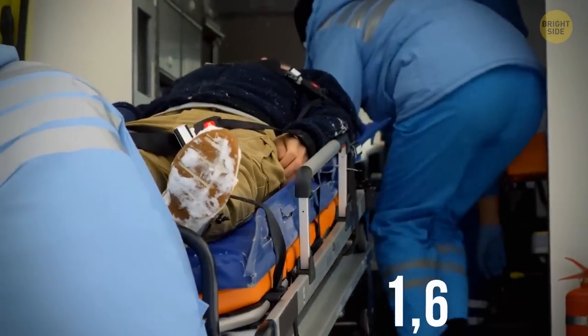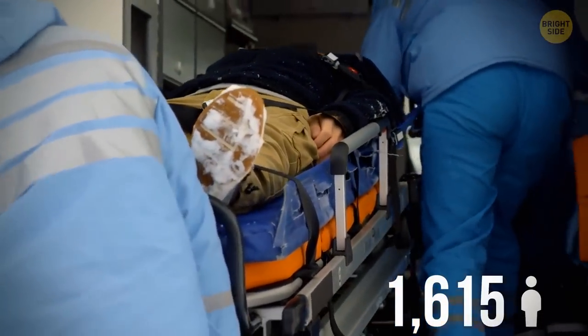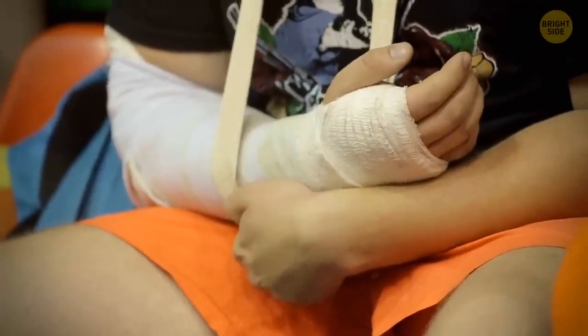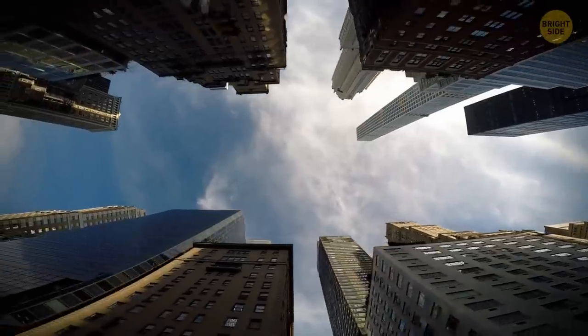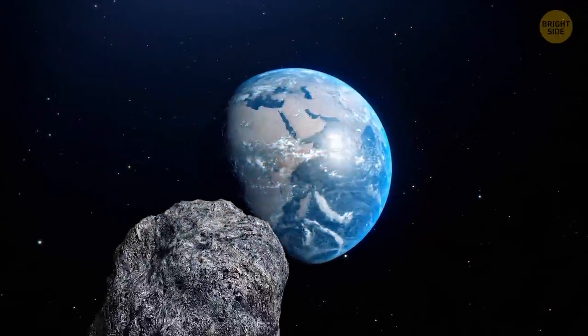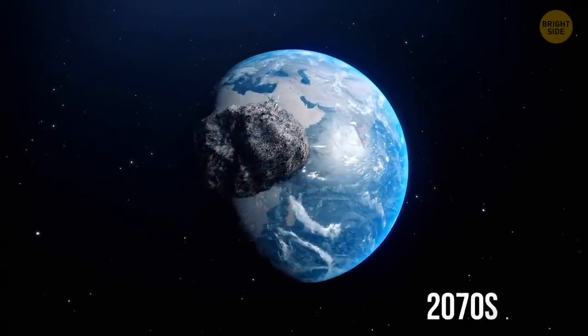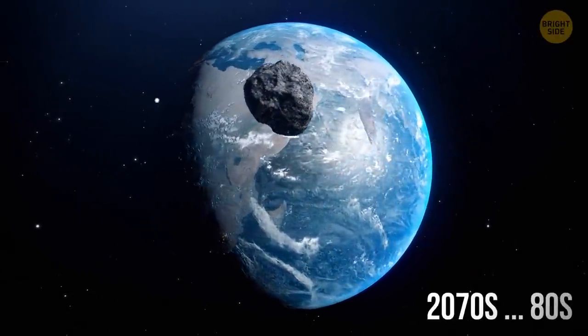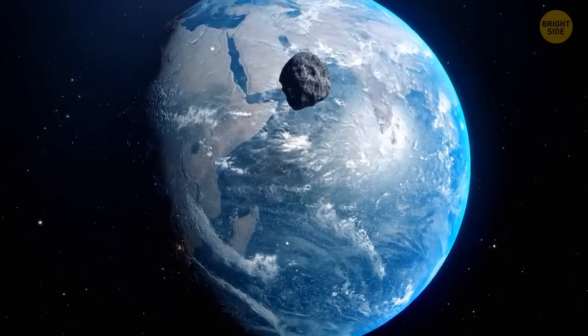It took a while to repair everything, and the scale of this destruction was quite serious. As a result, there were 1,615 injured. But, fortunately, no casualties. At least, we're safe for the time being. The next such asteroid may come to us only in the 2070s or 80s, and no one knows where exactly it wants to land.